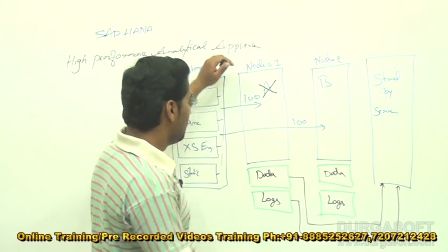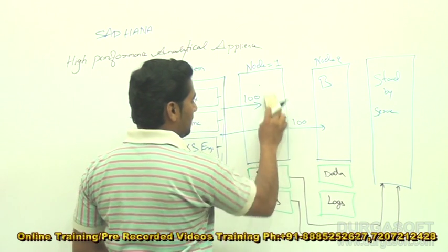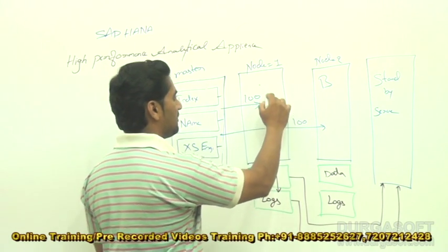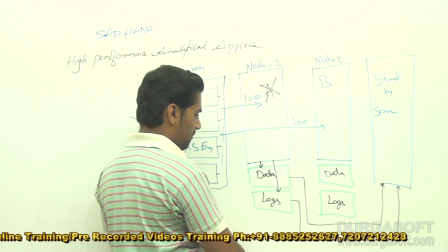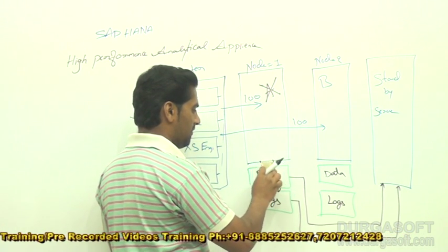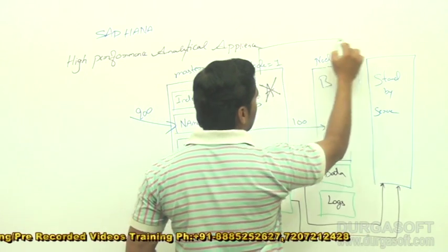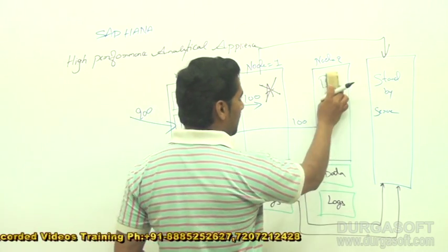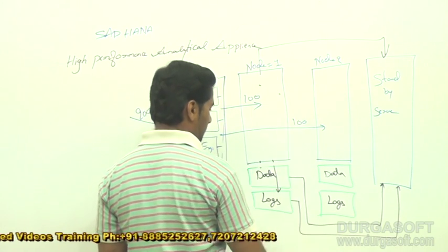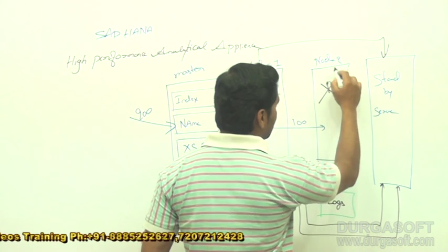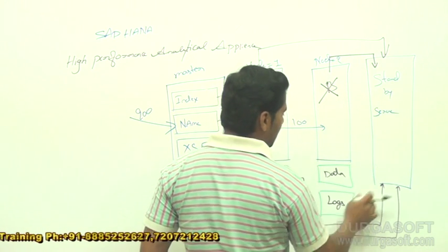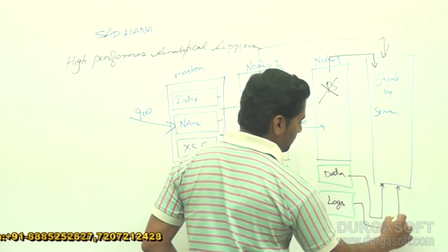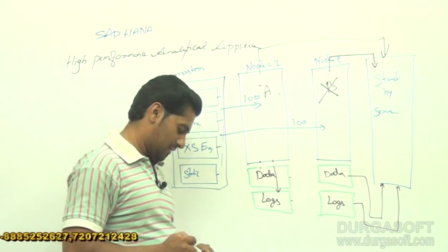Whenever you do any transaction, if a node crashes, the work moves from data backup and log backup to the standby server. Once node A crashes, the data will be docked and the record will transfer over to the standby server, so no data is lost. Similarly, if node B crashes, the record will hand over to the standby server and data backup connects accordingly.